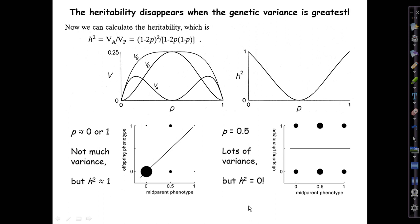In the middle when p is a half, there's a huge amount of variance phenotypically—the maximum—but the heritability is zero. Why? Because the most common mid-parent value is a half, and the offspring phenotypes are equally likely to be zero or one. It makes no difference whether the mid-parents are zero, a half, or one; you get the same distribution of offspring.